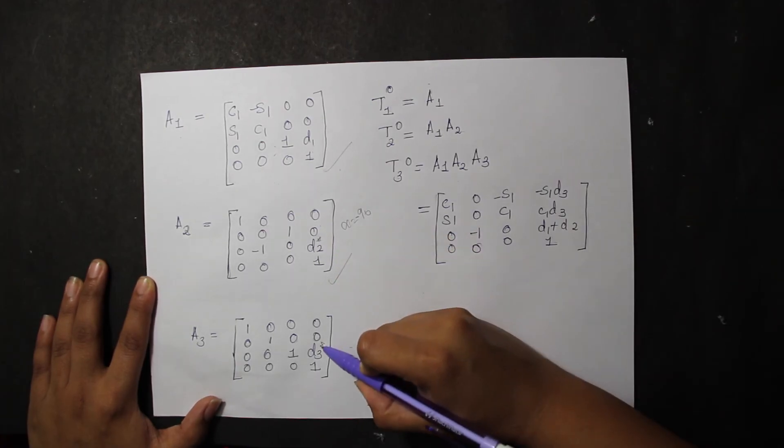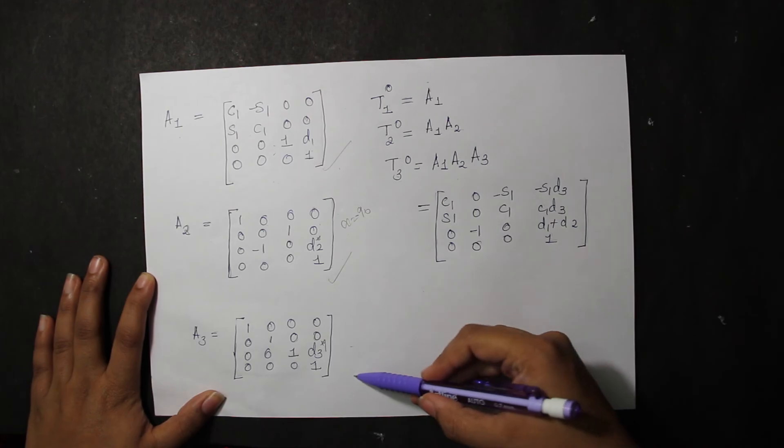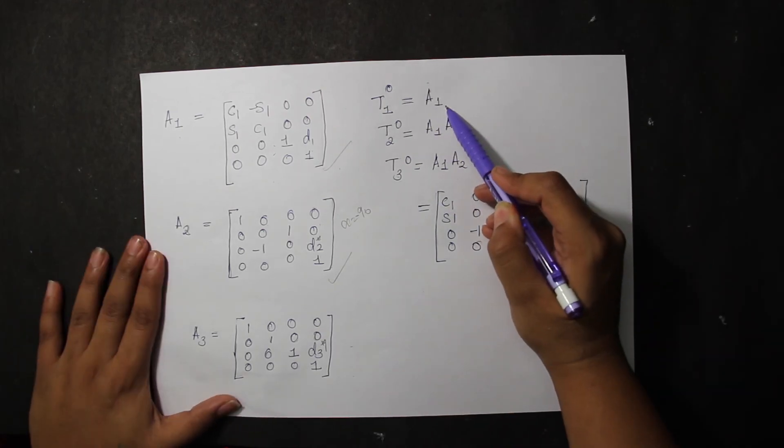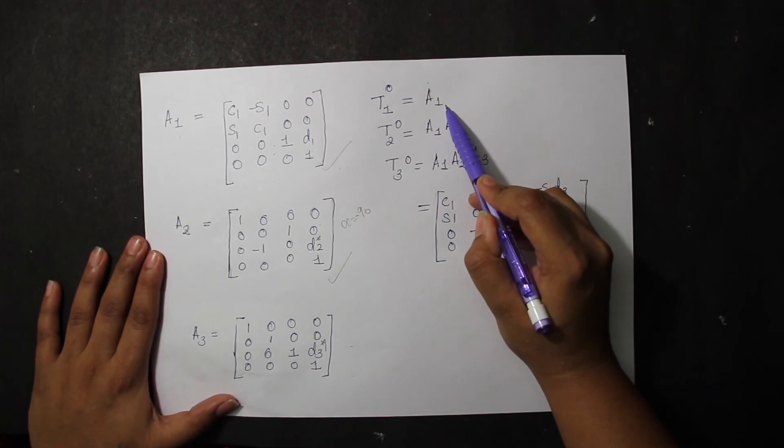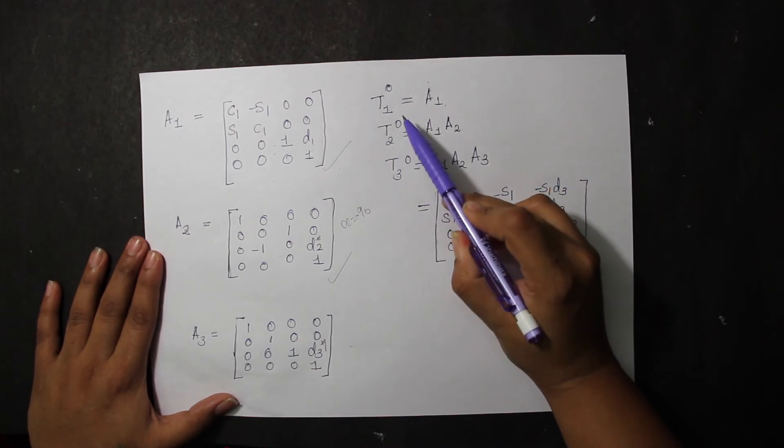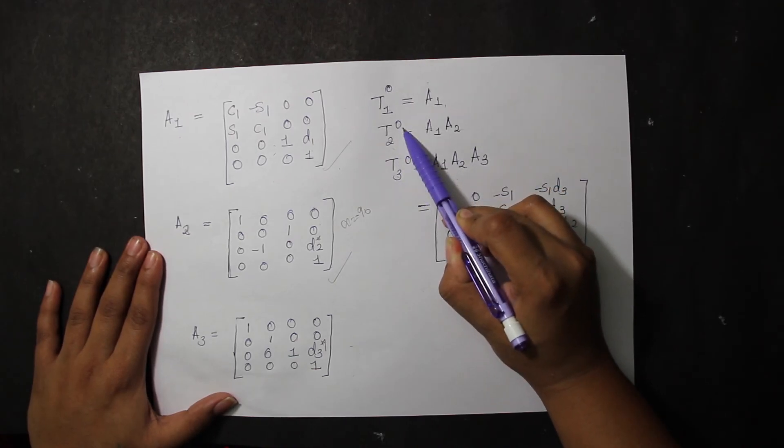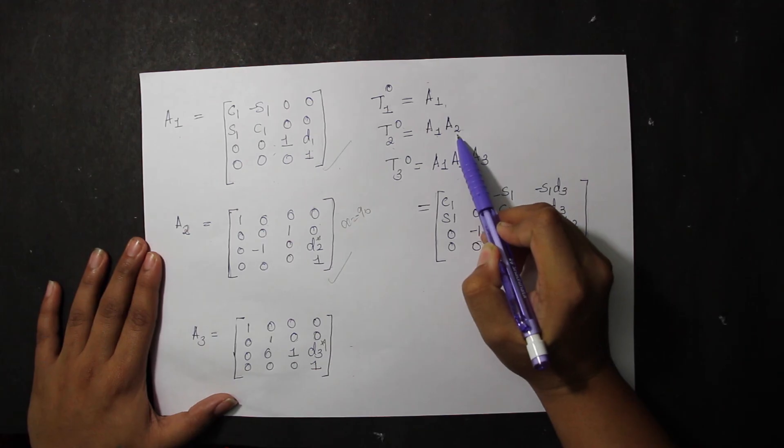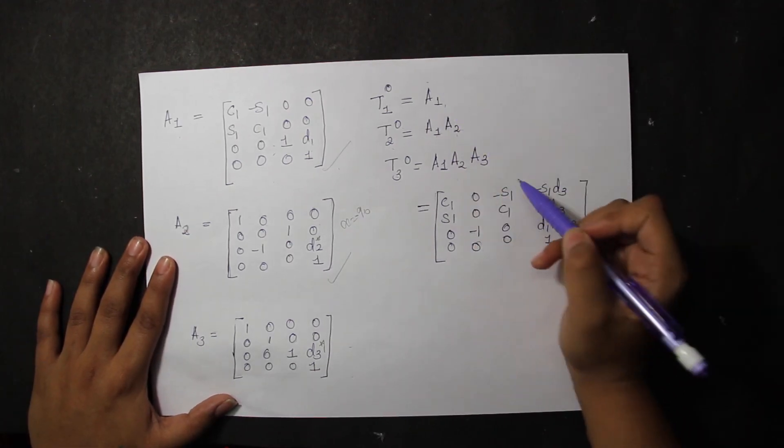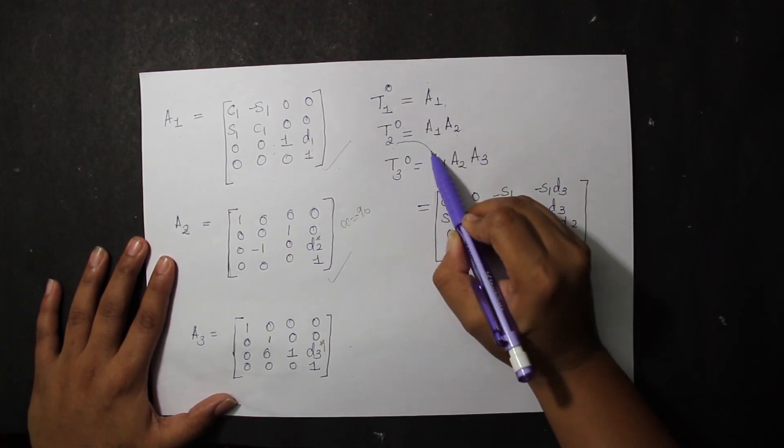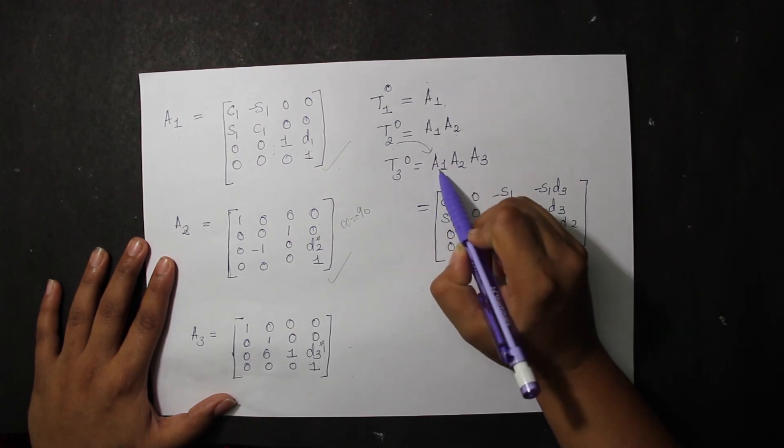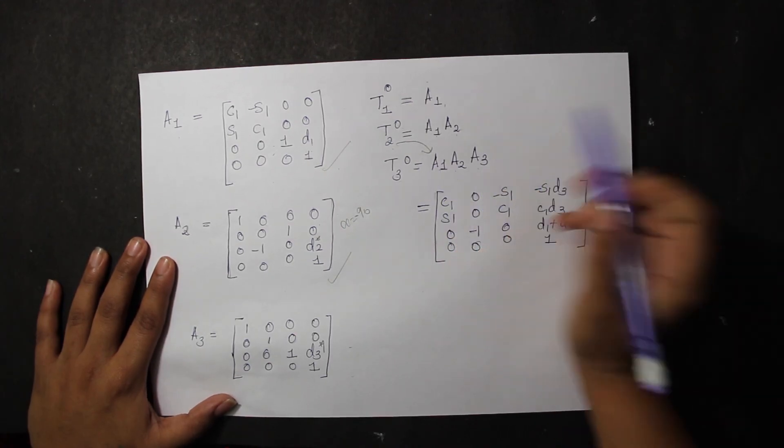Now let's look at what T1 with respect to 0 frame is. A1 - since that is the homogeneous transformation. For T2 with respect to 0, we have A1 into A2 because we have to link both the frames. Similarly, for T3 with respect to 0, it's A1 into A2 into A3.